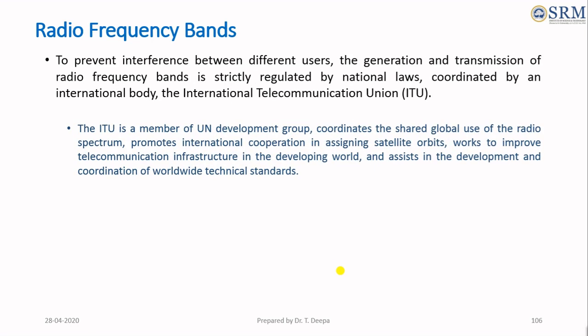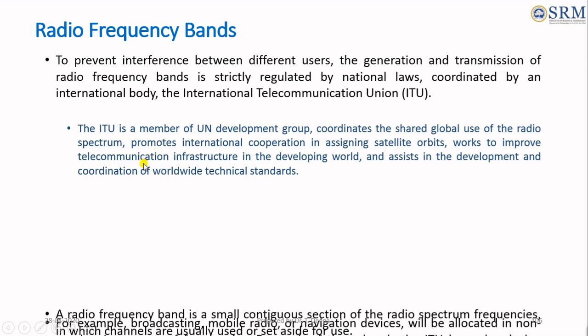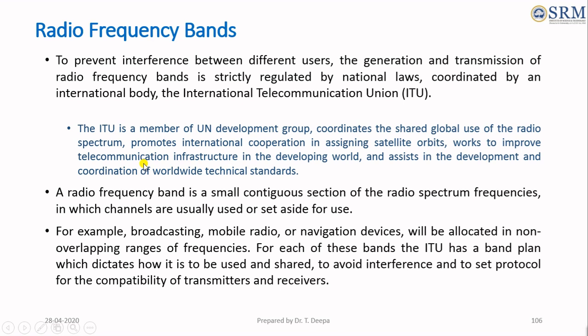The different parts of radio frequency bands are allocated by the International Telecommunication Union for different radio transmission technologies and applications. Some radio communication services are defined in ITU's radio regulations. The ITU divides the radio spectrum into 12 bands. A radio frequency band is a small contiguous section of the radio spectrum in which channels are usually used or set aside for use.